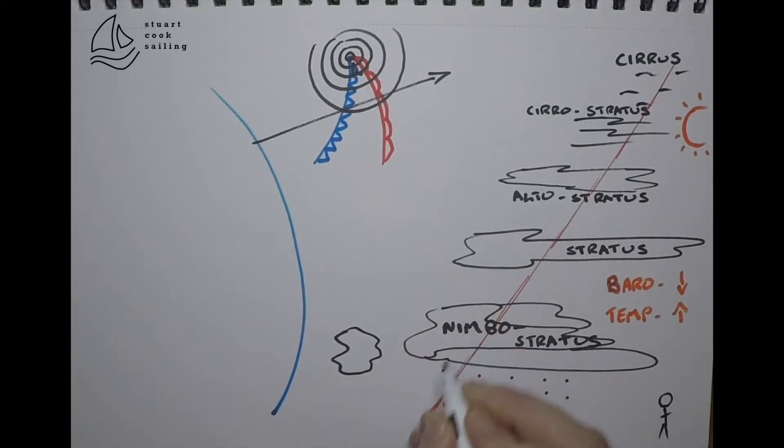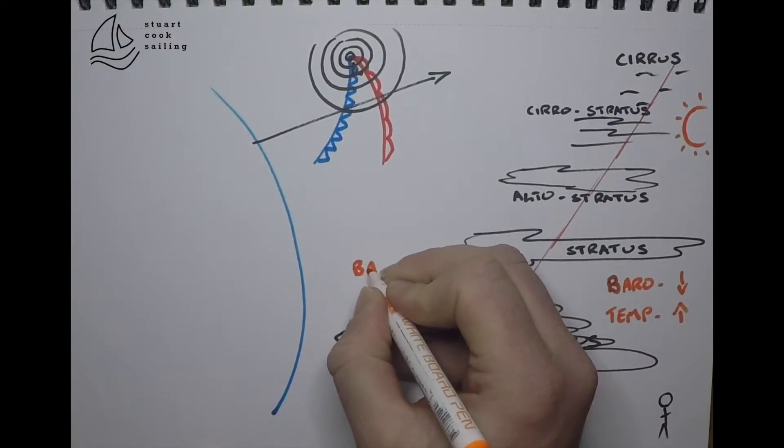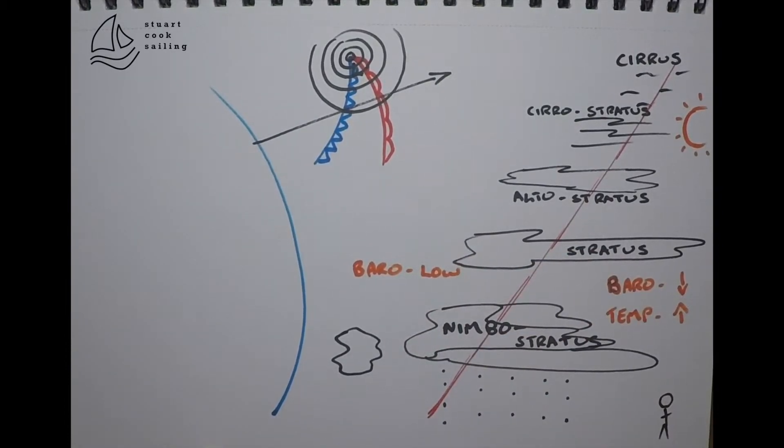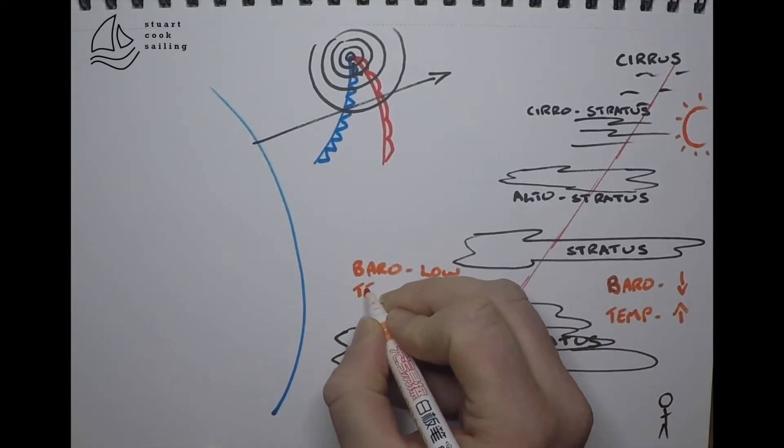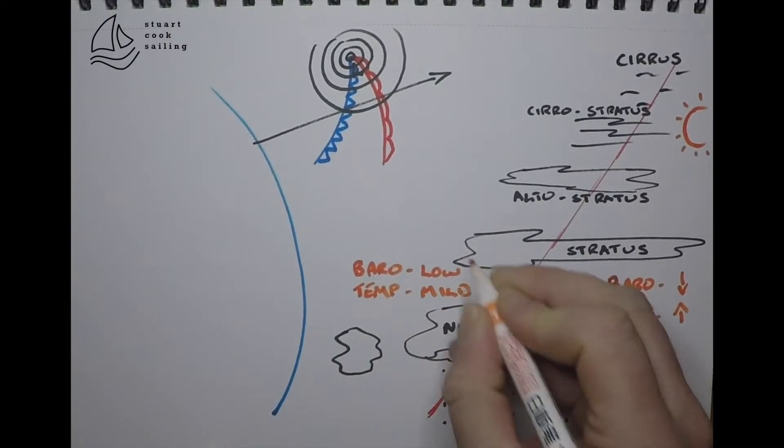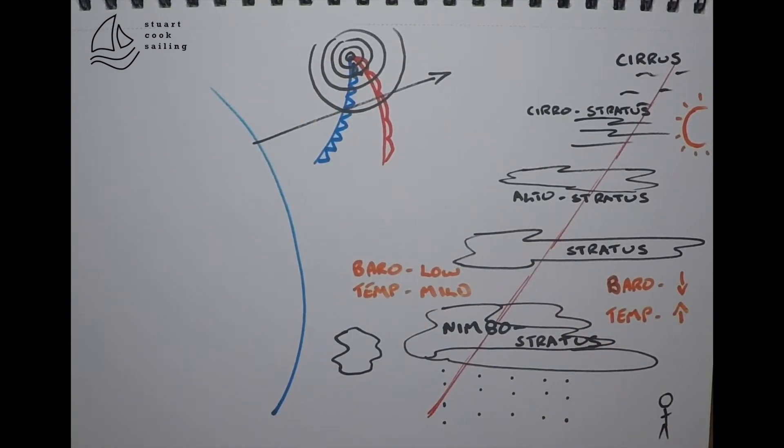As the warm front passes, the rain will stop. Depending on how far away we are from the center, we may get a little break in the cloud. Our pressure is now low as we're closest to the center of the system, whereas our temperature is going to be mild because we're in this warm air sector that's traveled to us up from the tropics in this northern hemisphere example.